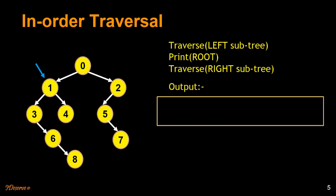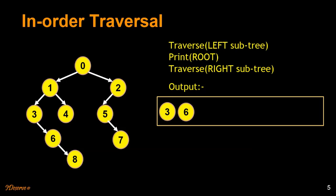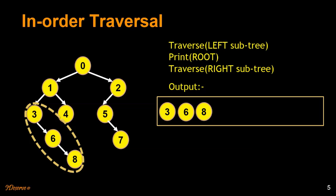Let's start with the root. We will traverse to the left subtree, again towards the left. Since at node 3 the left subtree is empty, we print out 3. We traverse to the right of 3 — we are at 6. The left subtree of 6 is empty, so we print out 6 and traverse towards its right. At 8 we don't have any left or right subtree, so we print out 8. We go back and see that the left subtree of 1 is traversed, so we print out 1 and traverse towards the right subtree of 1 which is 4. At 4 there are no left or right subtrees so we print out 4.